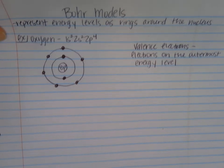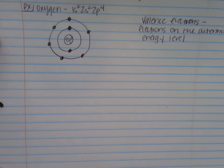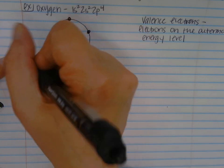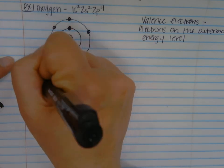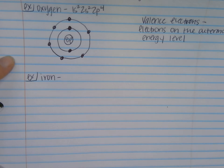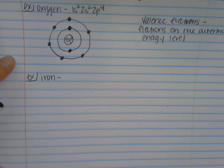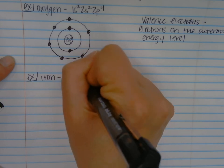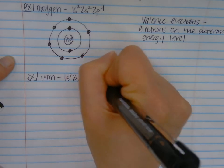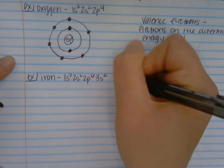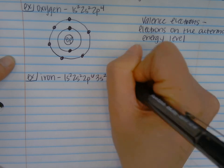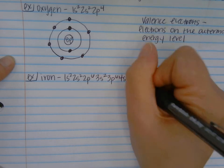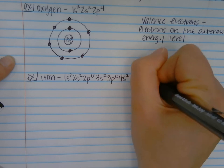Let's go ahead and do another example — iron this time. Iron is in the d block, so it does have an electron configuration with a d orbital. The electron configuration is 1s2, 2s2, 2p6, 3s2, 3p6, 4s2, and then 3d6.